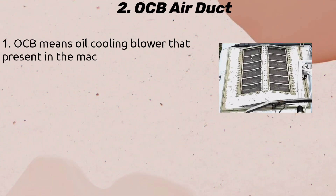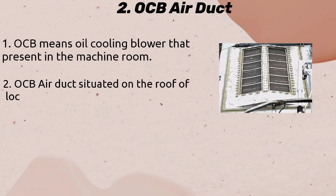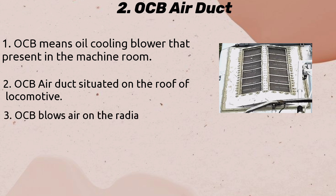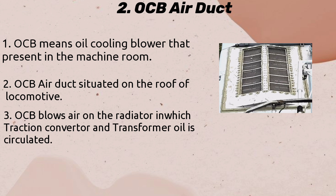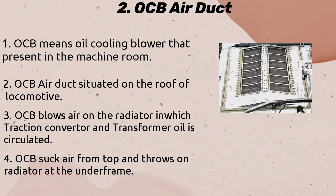OCB Air Duct: OCB means Oil Cooling Blower, present in the machine room. The OCB Air Duct is situated on the roof of the locomotive. The OCB blows air on the radiator in which traction converter and transformer oil is circulated. The OCB sucks air from the top and throws it onto the radiator at the underframe.